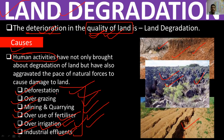Deforestation — if we cut down trees and forests — leads to increased soil erosion. The land visible in this image has been degraded due to soil erosion, because there is no grass or trees present to stop the flow of water.